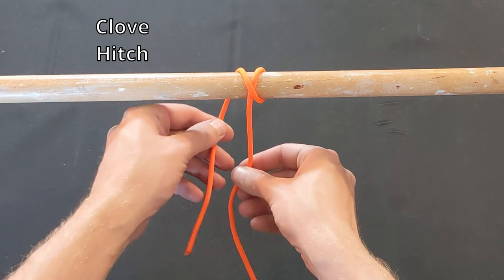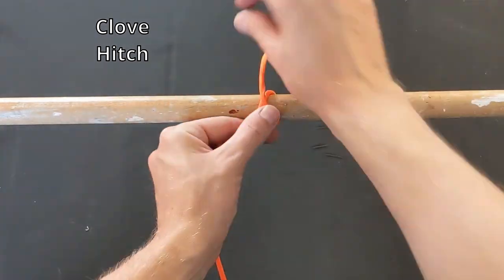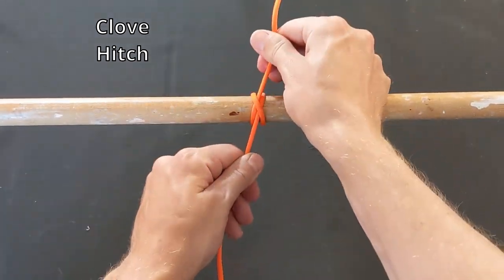In the clove hitch, the line is brought through the X without bringing it over the standing end. The constrictor knot is a more secure alternative to the clove hitch, but potentially harder to untie.